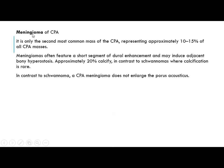The second most common pathology of the CP angle is meningioma, representing about 10 to 15% of all CP angle masses. Meningioma has a short segment of dural enhancement and may induce adjacent bony hyperostosis. About 20% will be calcified — in contrast to schwannoma where calcification is rare. CP angle meningioma does not enlarge the porus acousticus.